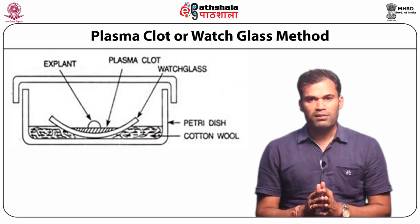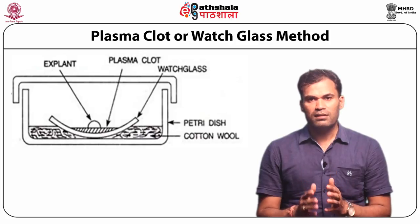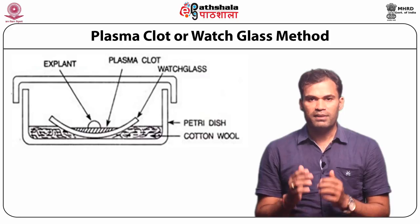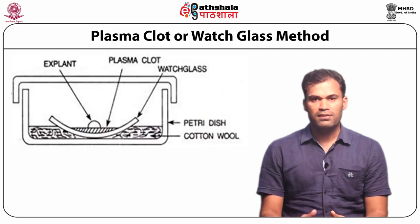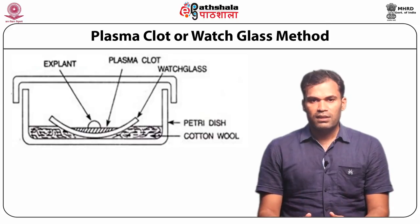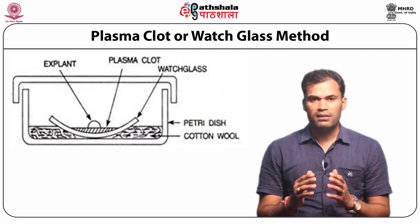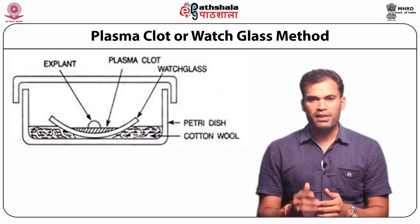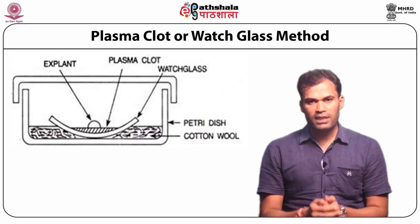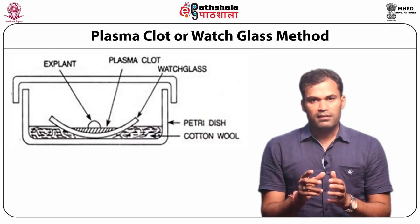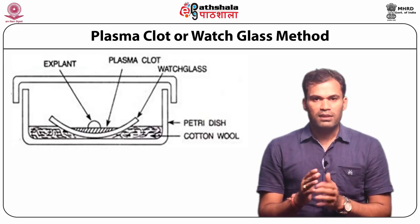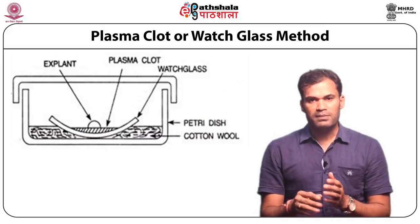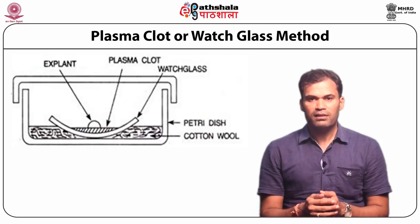The plasma clot or watch glass method is used to study the development of avian limb bone rudiments and was extended to investigate growth and differentiation of other avian and mammalian tissues. Avian tissues are placed on a clot consisting of chick plasma and chick embryo extract in equal proportion, contained in a watch glass. One or two watch glasses are enclosed in a petri dish carpeted with moist cotton wool or filter paper to prevent evaporation. The explant is spotted on the plasma clot, sealed from the top with paraffin wax or filter paper.